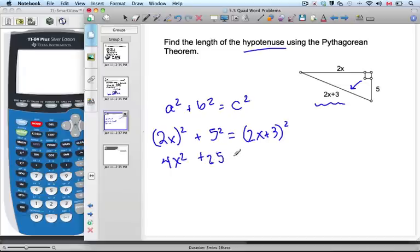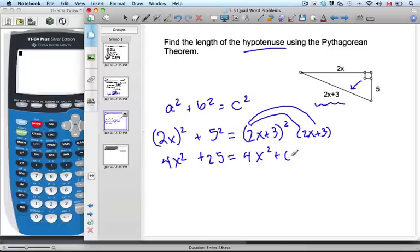Now you might want to consider pausing the podcast and trying to work this out by yourself at this point in time, but we'll just keep on going. If I was to write this out, sometimes it makes it easier because when I'm squaring I have to do the whole thing times itself. So 2x times 2x is 4x², plus 6x, plus another 6x, plus 9.